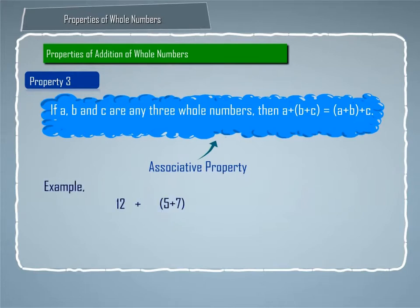For example, 12 plus 5 plus 7 is equal to 24. Also, 12 plus 5 plus 7 is equal to 12 plus 5 plus 7.